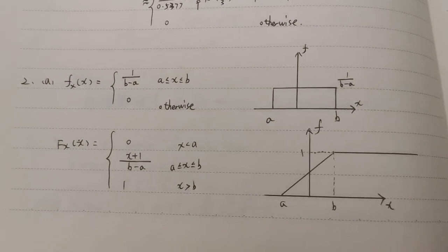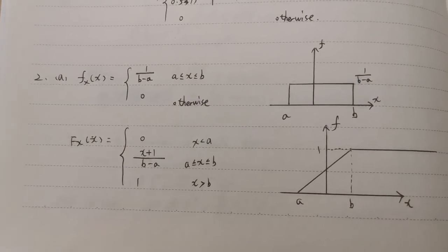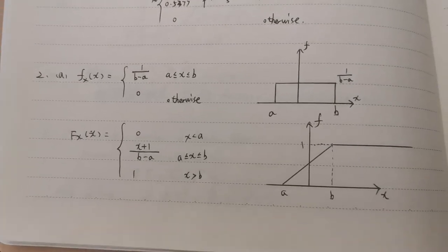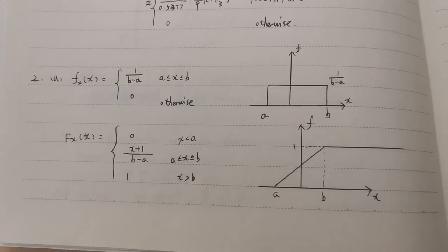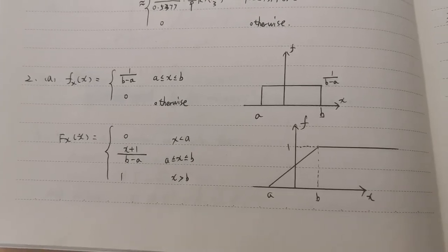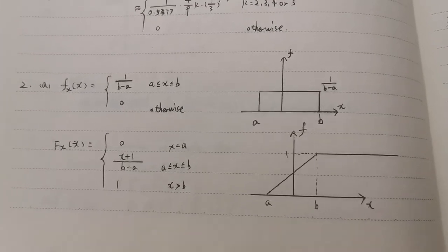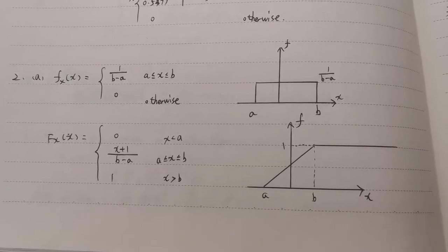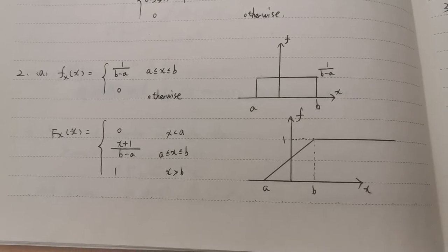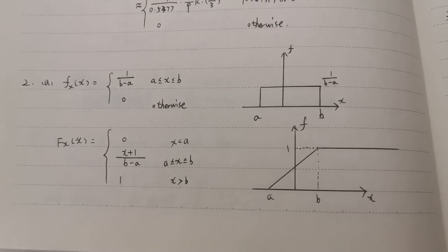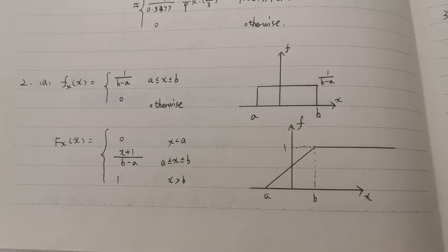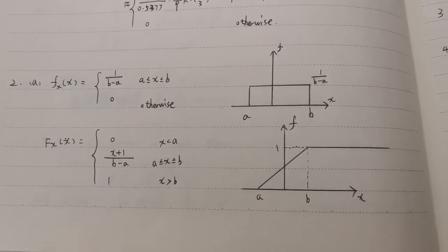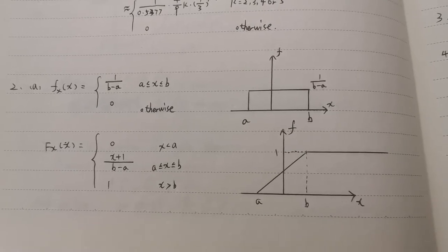Since we are given that x is uniform in the area from a to b, we can easily find lowercase fx. The graph of this function is shown on the right. From lowercase fx, we can calculate uppercase fx. Its graph is also on the right.